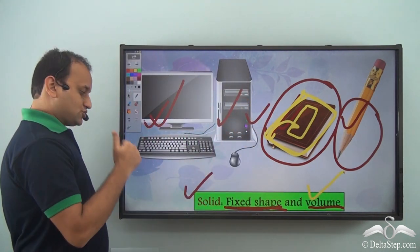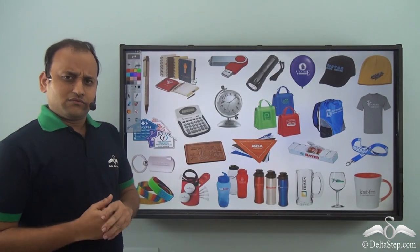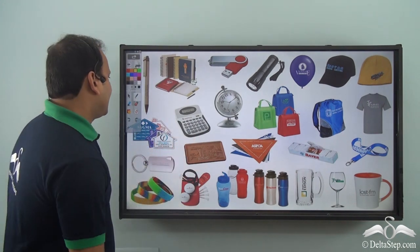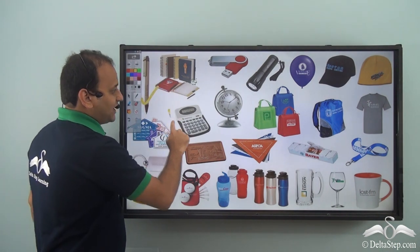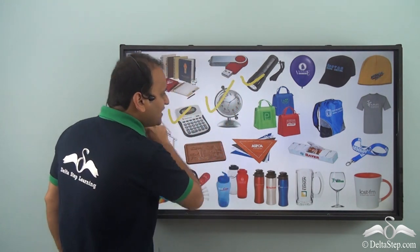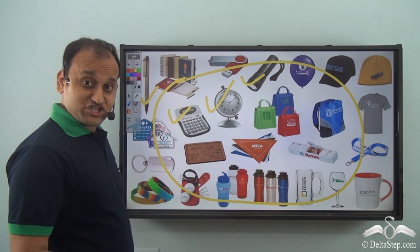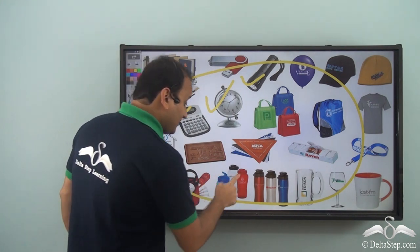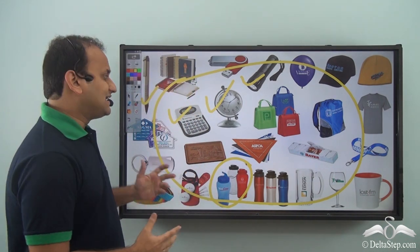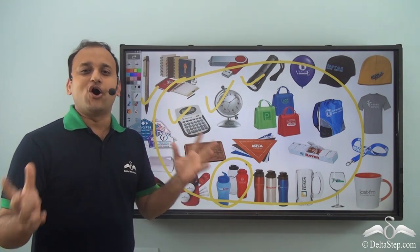So solids have a fixed shape and a fixed volume. All around us there are so many different types of solids. Right from this pen to this calculator, this clock, this torch — everything all around are solids because they have a fixed shape and will hold a fixed amount of space, that is, a fixed volume. And that is why they are all solids and we are completely surrounded by solids all around us.